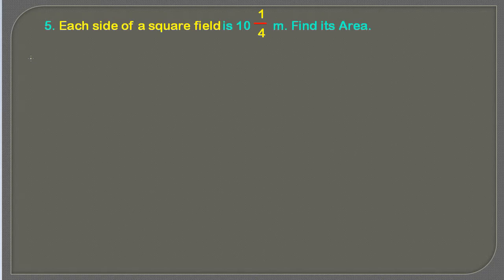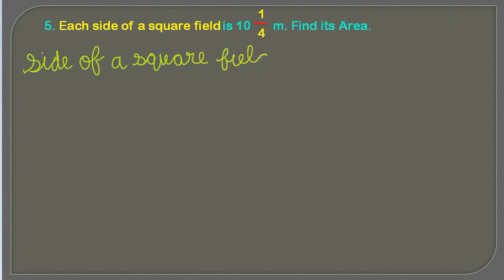So first of all we are going to write these statements. First statement would be: side of a square field is equals to 10 and 1/4 meters.